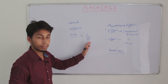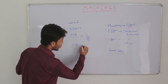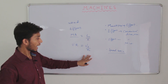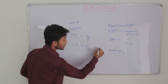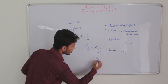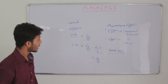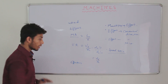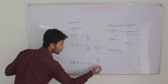The third technical term is mechanical advantage, which is the ratio of load to effort. Next is velocity ratio, which is the ratio of velocity of effort to velocity of load. Since velocity equals displacement by time, this simplifies to displacement of effort divided by displacement of load — which represents the gain in speed. Finally, efficiency is the ratio of work output to work input.